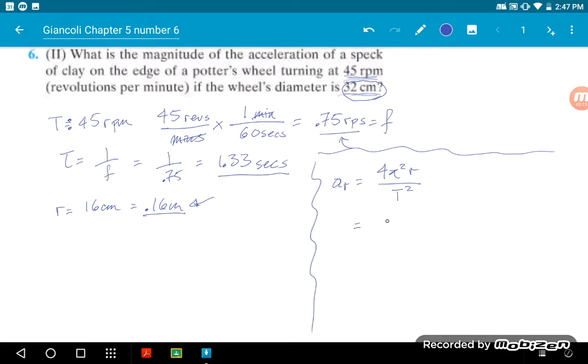So just plug in the digits that we have here: r being 0.16 meters, 4π² times 0.16 divided by the period squared, which is 1.33 squared. If you punch that all in correctly, you should get 3.57 meters per second squared.